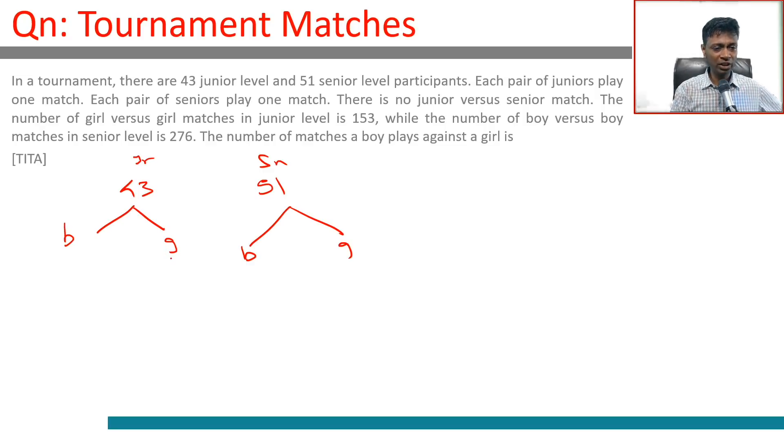Let's say n number of girls here, m number of boys here. n girls here, m boys here. This question is very doable. Girl versus girl matches is 153.